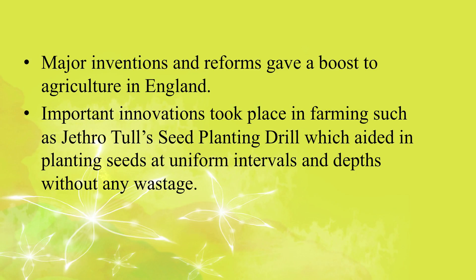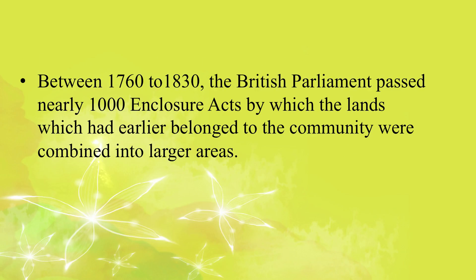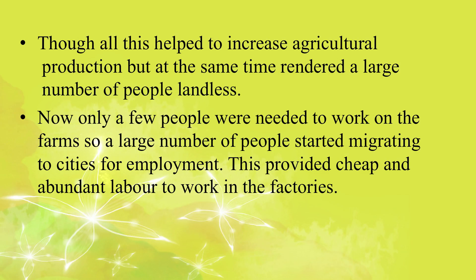Major inventions and reforms gave a boost to agriculture in England. Important innovations took place in farming, such as Jethro Tull's seed planting drill, which aided in planting seeds at a uniform interval and depth without any wastage. Between 1760 to 1830, the British Parliament passed nearly 1,000 enclosure acts by which lands that had earlier belonged to the community were combined into larger areas. Only a few people were needed to work on the farms, so a large number of people started migrating to cities for employment, providing cheap and abundant labor to work in the factories.